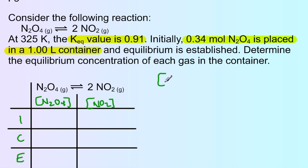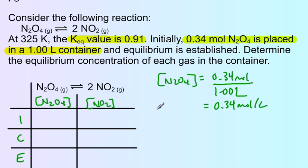Initially, the concentration of N2O4 is 0.34 moles in a 1 liter container. Similar to the last problem, that's a trivial calculation, but I want to remind you to do it in case it's not a 1 liter container. So that's 0.34 moles per liter.